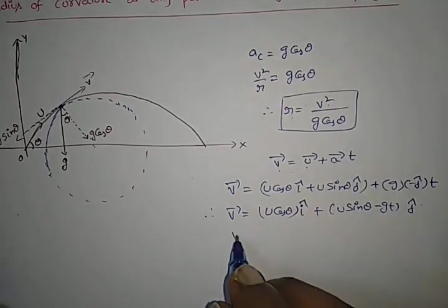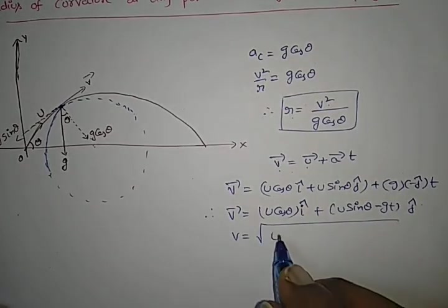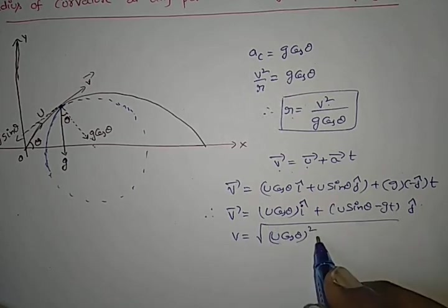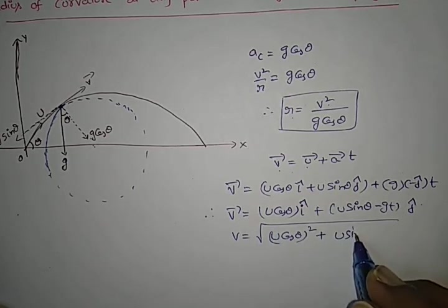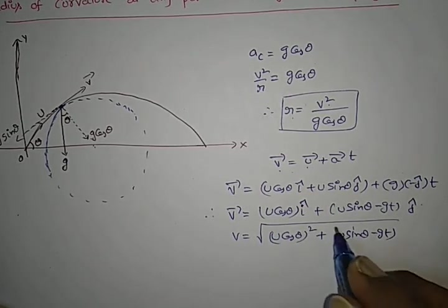By using this equation, we measure the magnitude of velocity v is equal to square root of (u cos theta)² plus (u sin theta minus g t)².